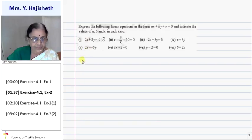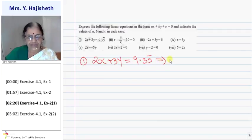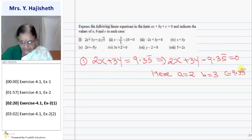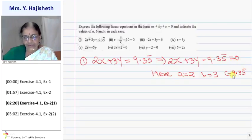First equation: 2x plus 3y equals 9.35 recurring (9.35̄). So first I get everything on the same side to get it in the form ax plus by plus c equals zero. Here a is two, b is three and c is minus 9.35 recurring (minus 9.35̄).